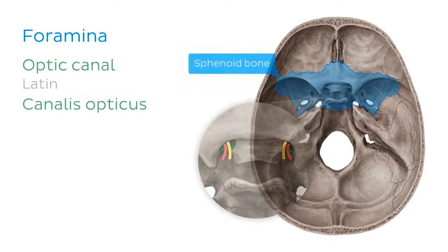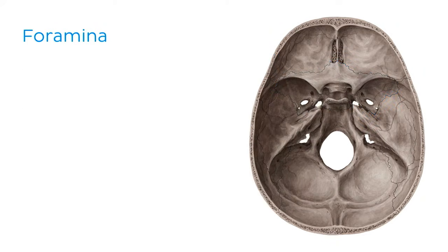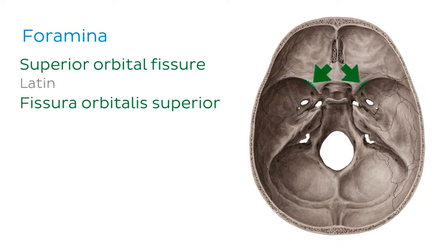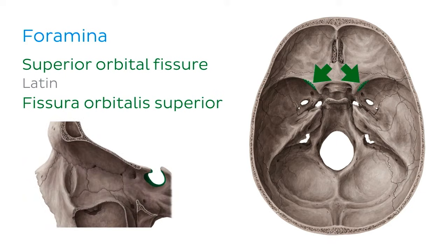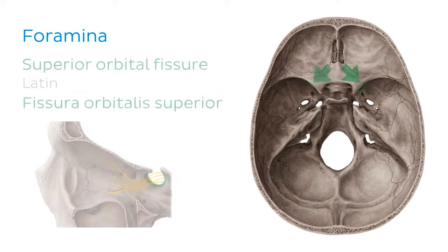In the middle cranial fossa, we find the superior orbital fissure. Lots of things pass through this structure: the trochlear, abducens, oculomotor, and ophthalmic nerves, which are all connected to vision and eye movement.